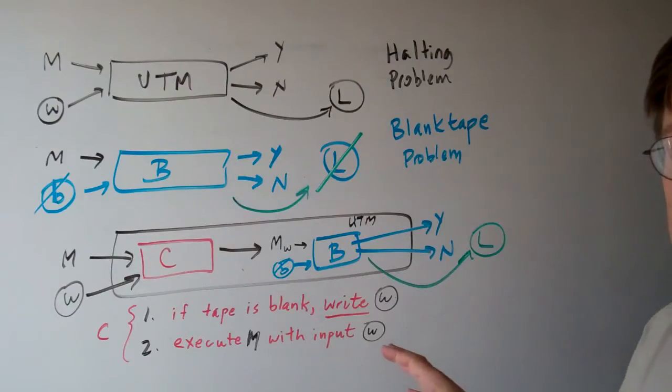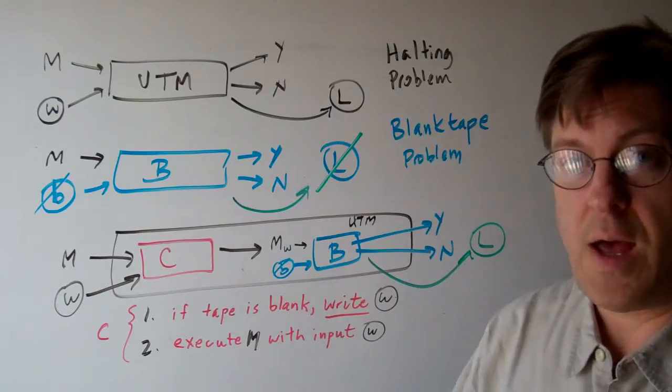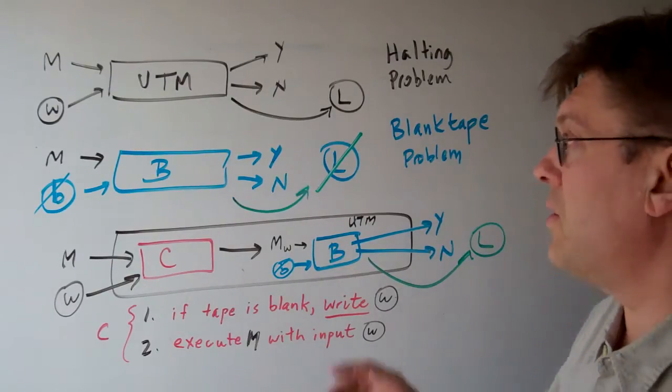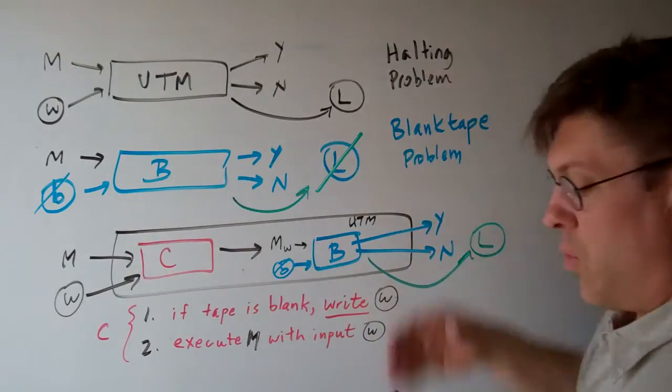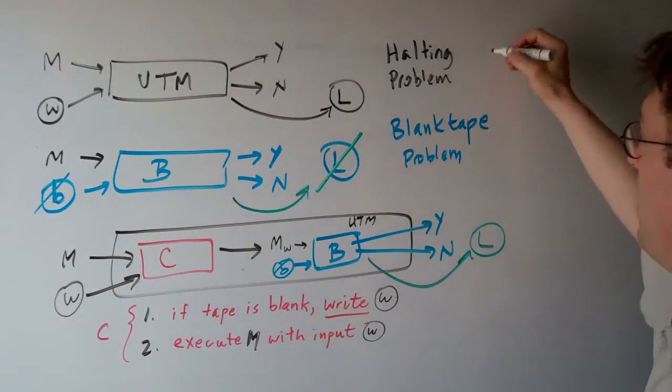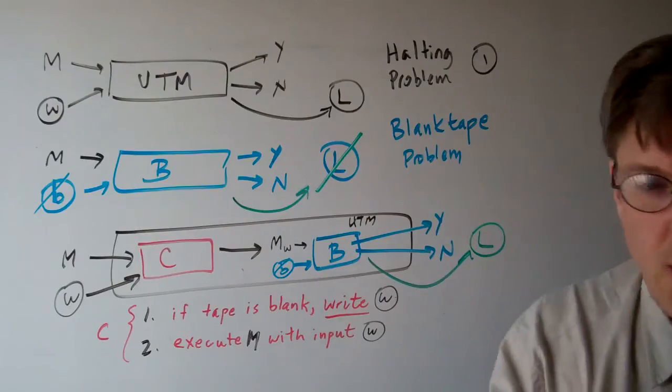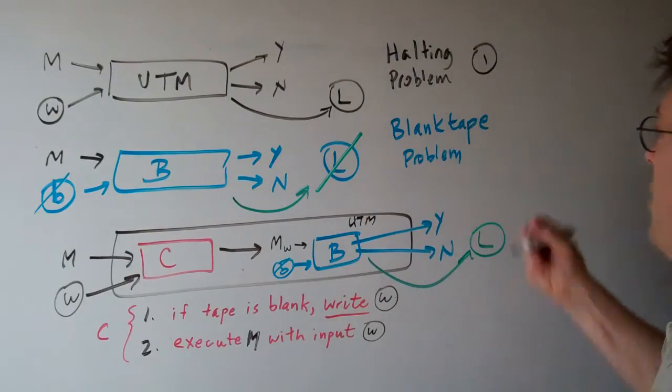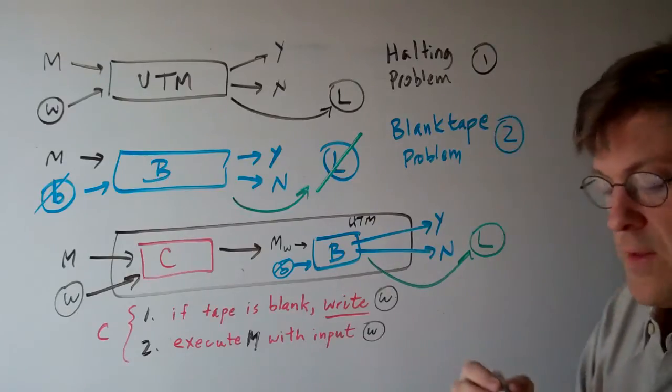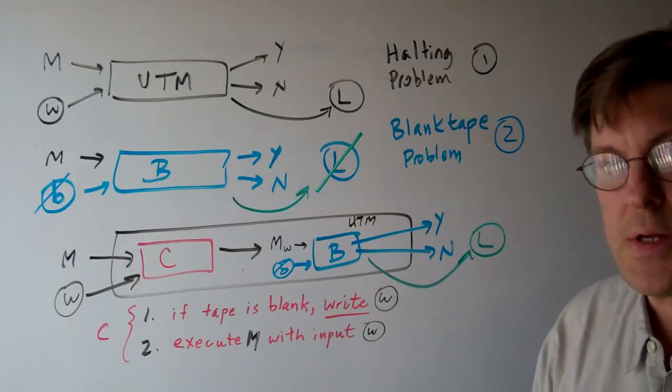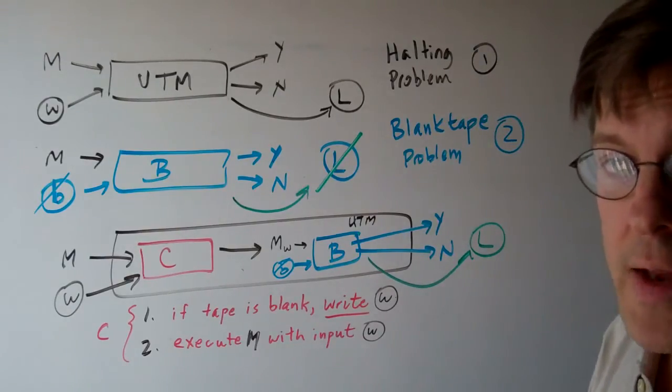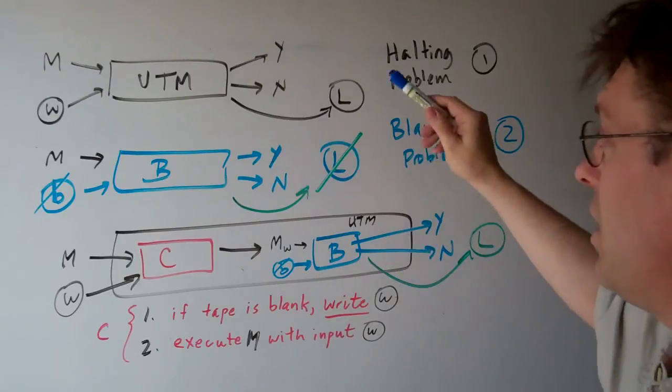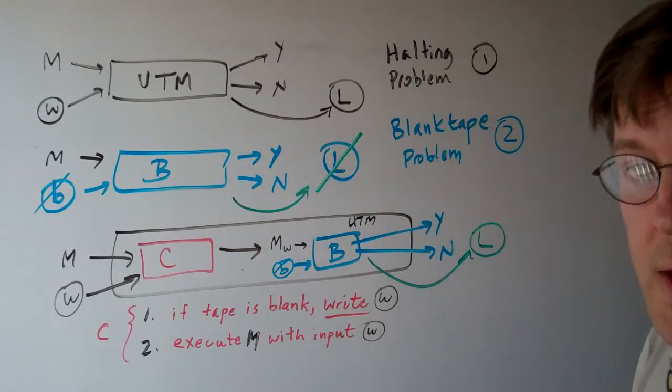This is a little bit tricky to comprehend, so take your time to understand this. We're saying step one, the halting problem we know is undecidable. Step two, we want to prove that the blank tape problem is undecidable. And we want to prove that by reducing the halting problem to the blank tape problem.